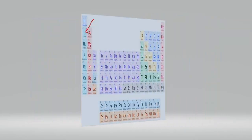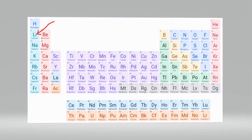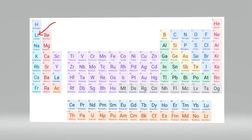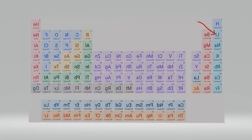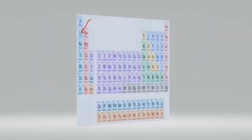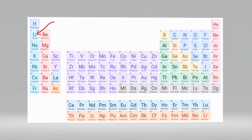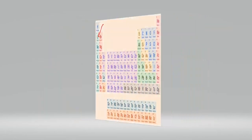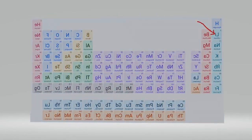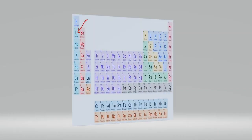Lithium. Lithium is a chemical element with the symbol Li and atomic number 3. It is part of group 1, alkali metals, of the periodic table.